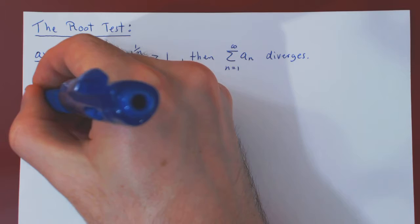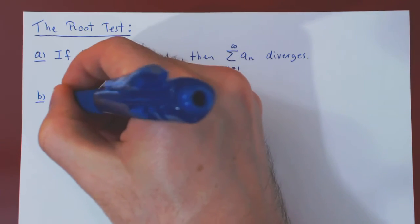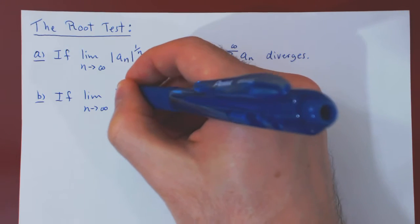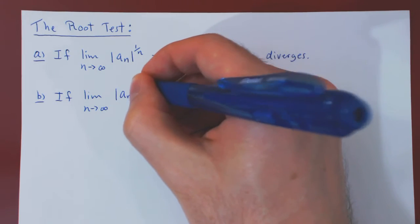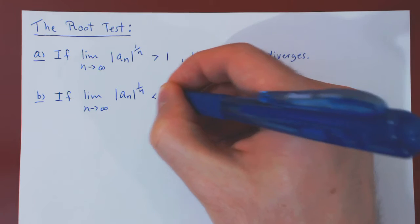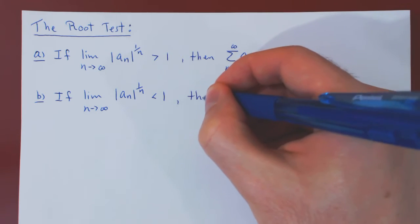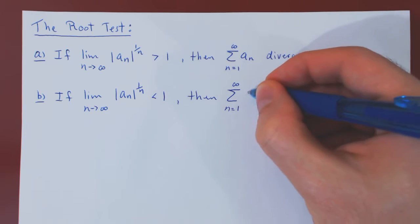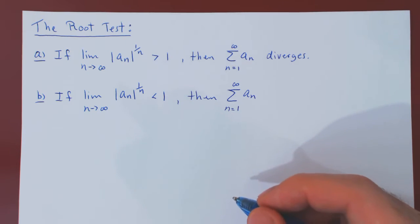Part b, if the same limit of the nth root of |an| in absolute value is now strictly less than 1, then the corresponding series converges absolutely.